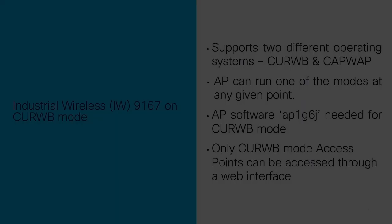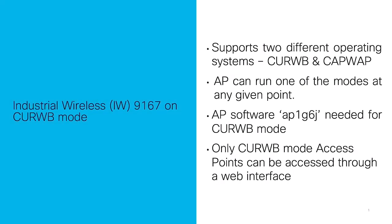The IW9167 supports two different operating systems: Cisco Ultra-Reliable Wireless Backhaul, shortly referred to as CURWB mode, and CAPWAP mode. Both stacks are used for different feature sets and data plane logic. The AP can only run on one of the modes at any given point.